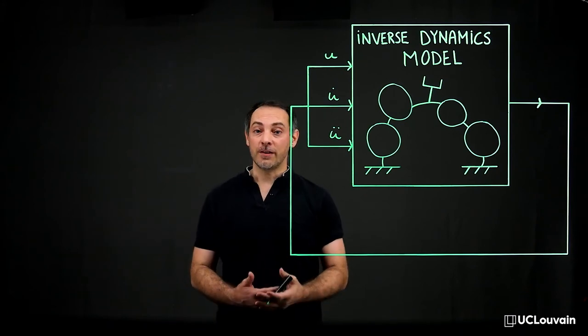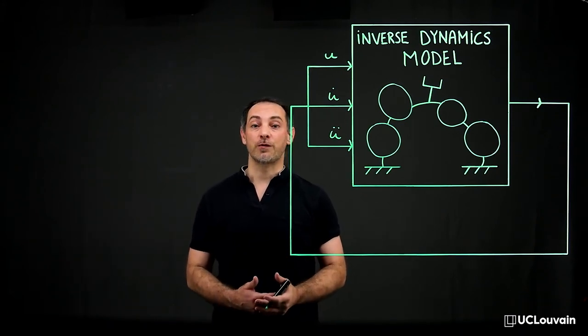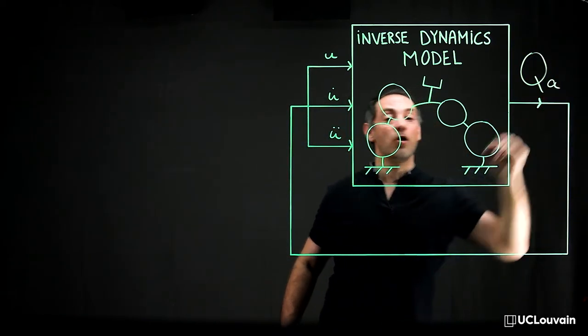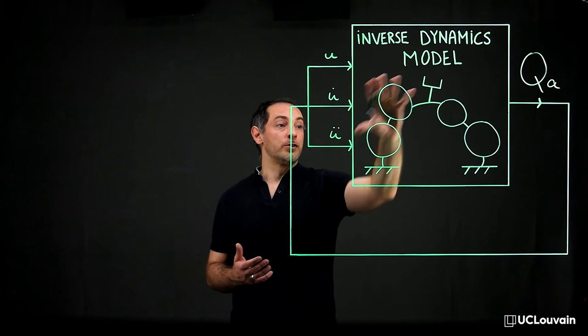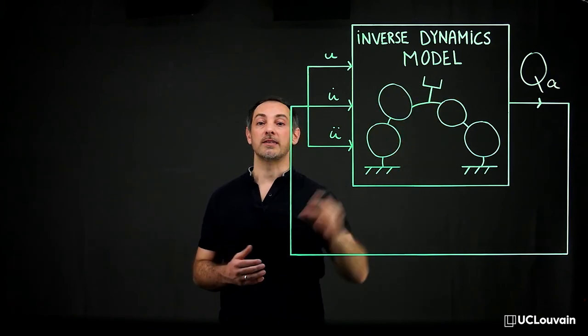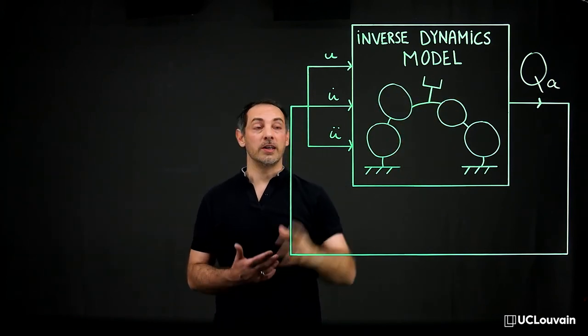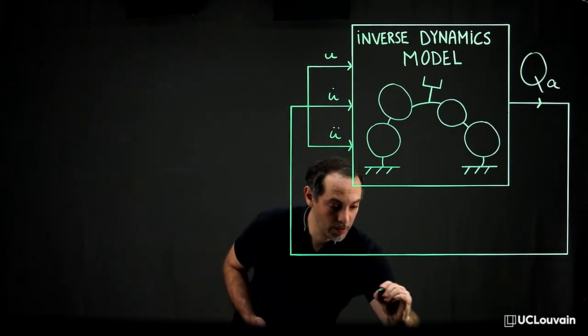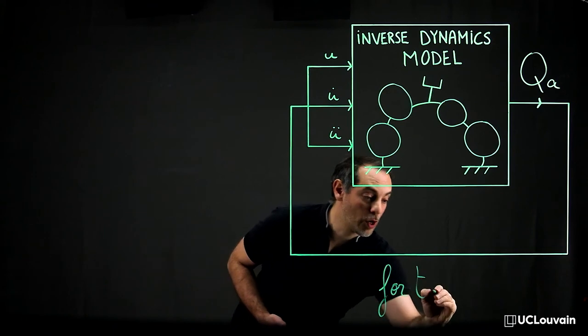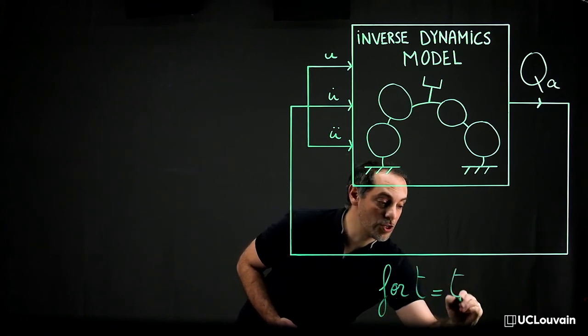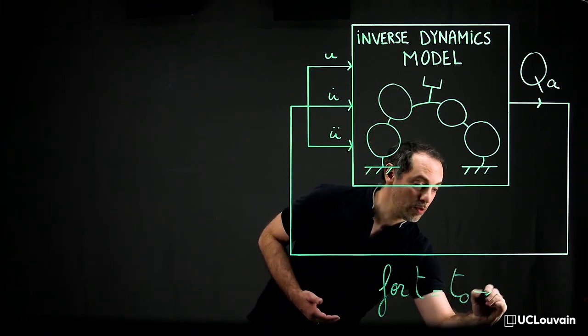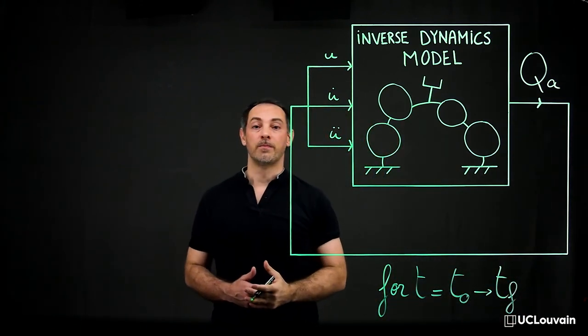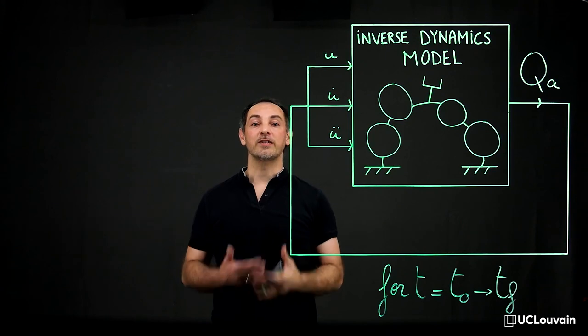The inverse dynamics computes the joint actuation forces and torques Q_a for all consecutive configurations of the multibody system according to the input trajectory as a function of time t going from the initial value t_0 to the final value t_f. Enjoy inverse dynamics.